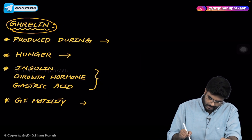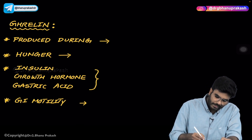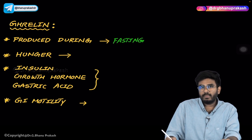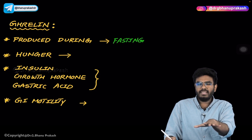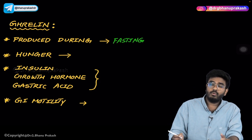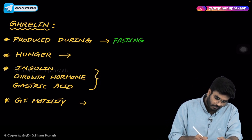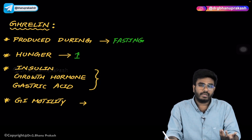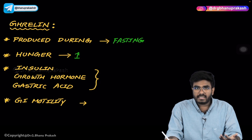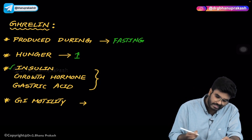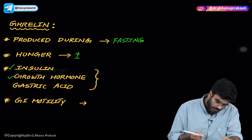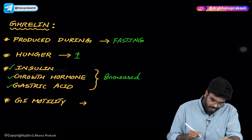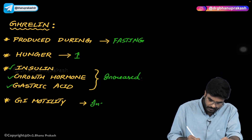Let's talk about the GI hormone ghrelin. Ghrelin is produced in the body during fasting. Think logically — during fasting, ghrelin is produced, so what might its function be? It increases blood glucose levels by increasing hunger. Whenever ghrelin is produced, you feel hungry and eat food. Ghrelin also increases insulin release, growth hormone release, and gastric acid release — everything is increased. GI motility is also increased, as the GI system is being activated.